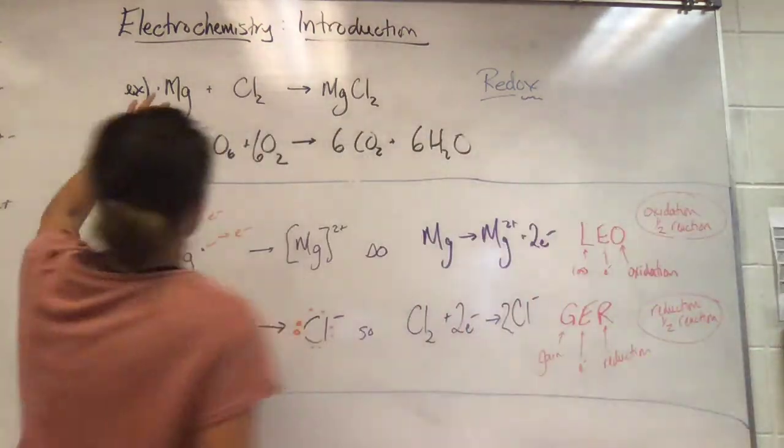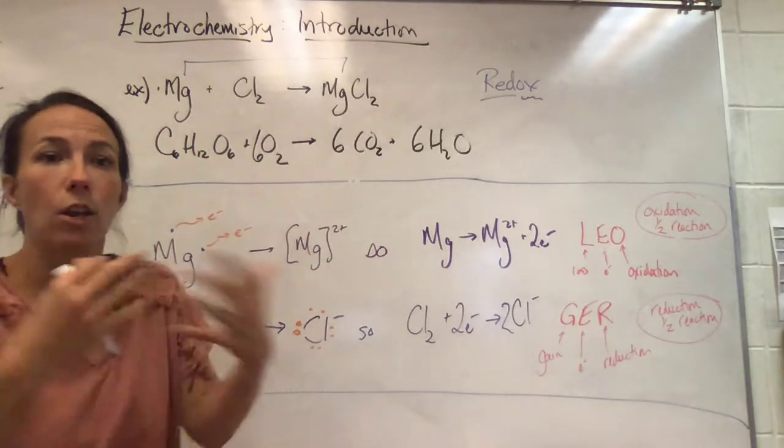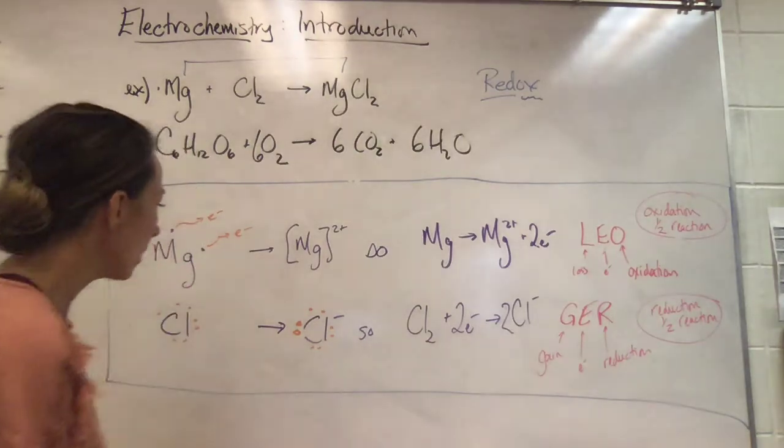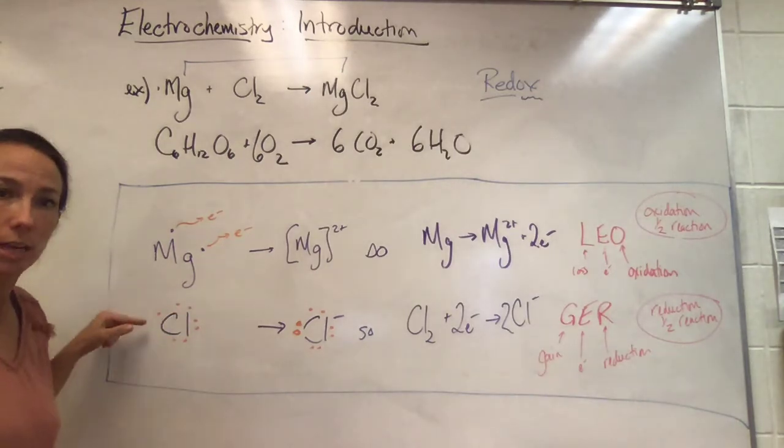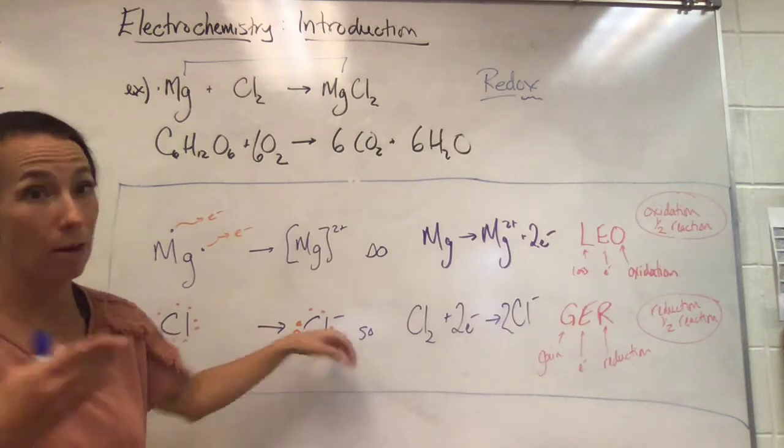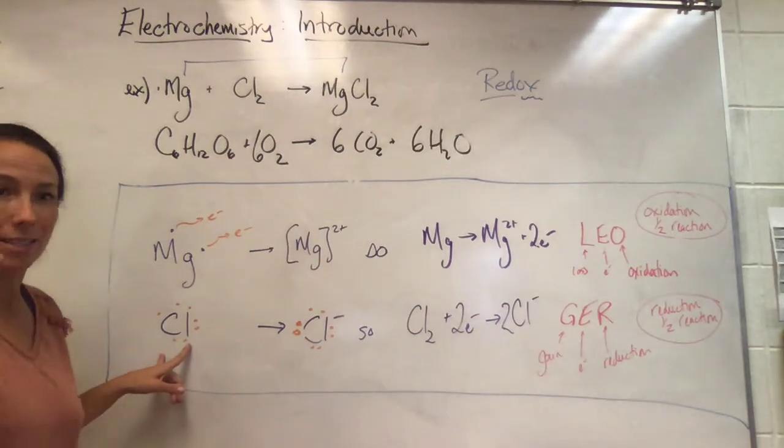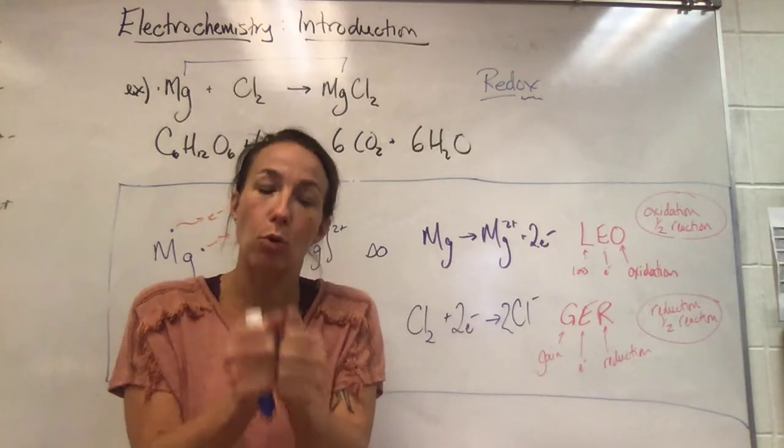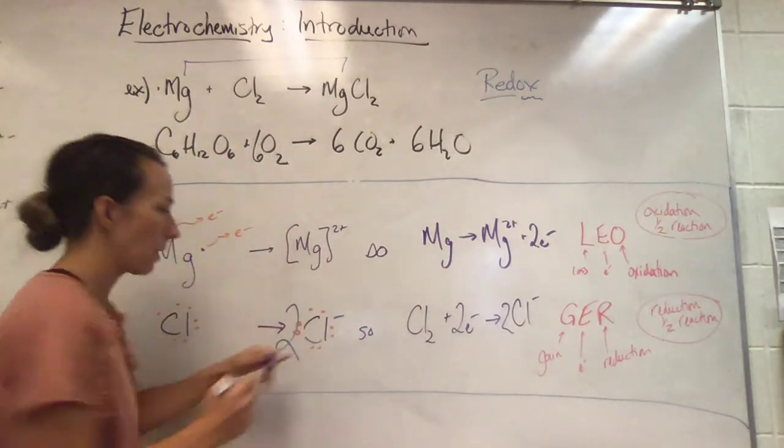This is only half of the story that's happening, so it's a half reaction. The other half of the story is the chlorine. If it lost electrons, something had to gain electrons. If I gave away 2 dollars, somebody has to gain 2 dollars. A chlorine atom has group 7, so 7 valence electrons, and it's missing one in order to have a full octet. So it's very happy to pick up that electron and become negatively charged.